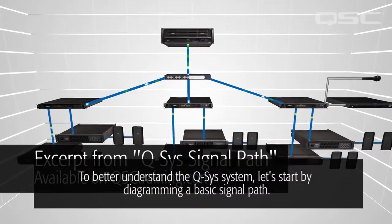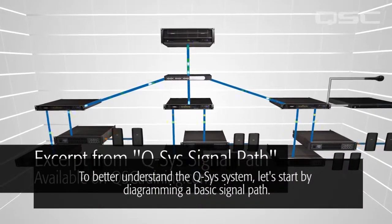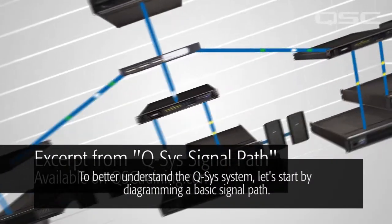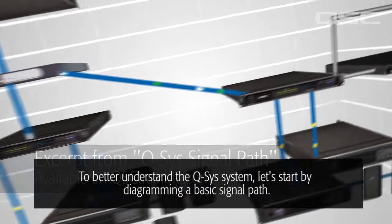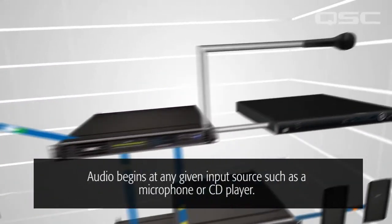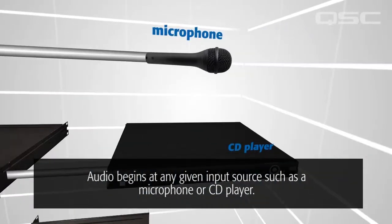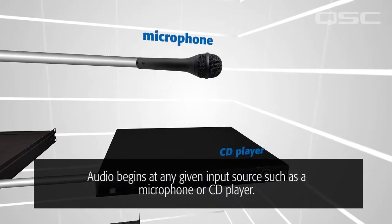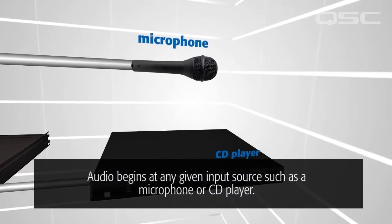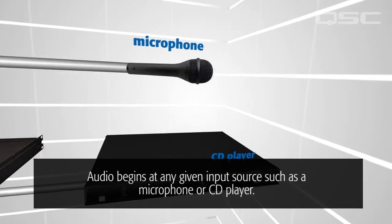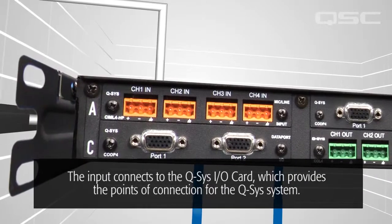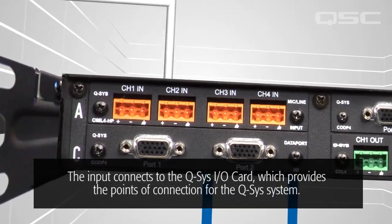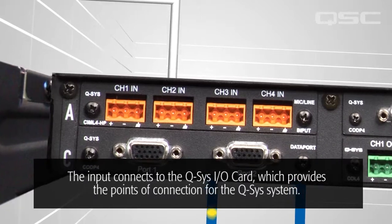To better understand the Q-SYS system, let's start by diagramming a basic signal path. Audio begins at any given input source, such as a microphone or CD player. The input connects to the Q-SYS I/O card, which provides the points of connection for the Q-SYS system.